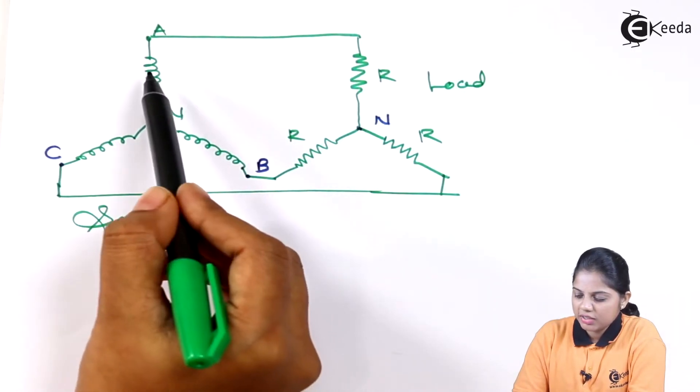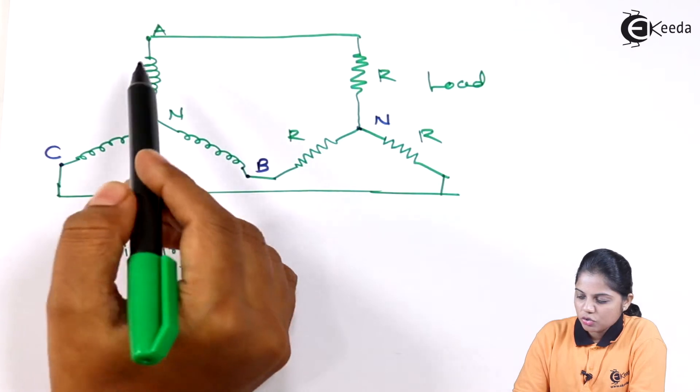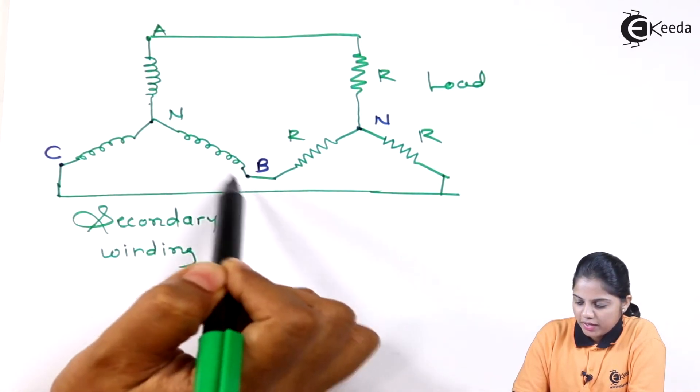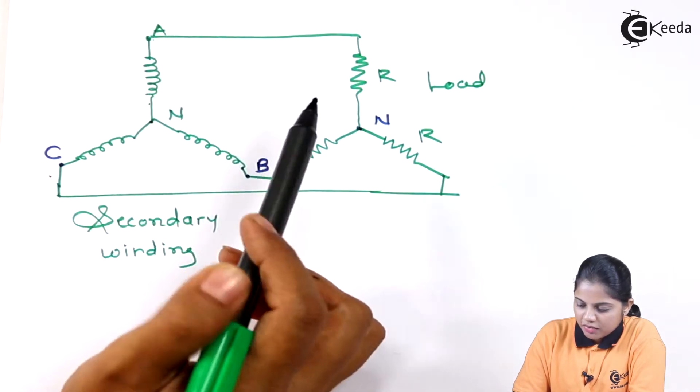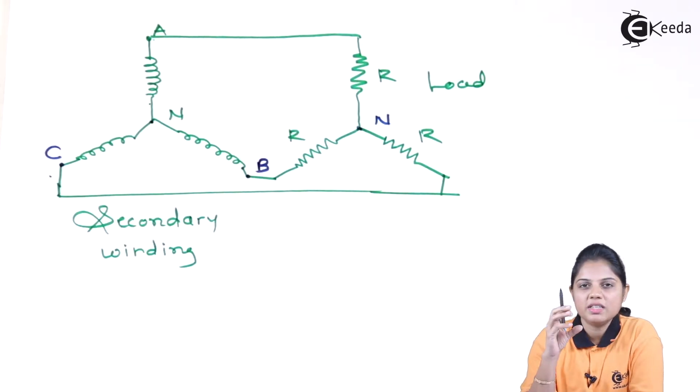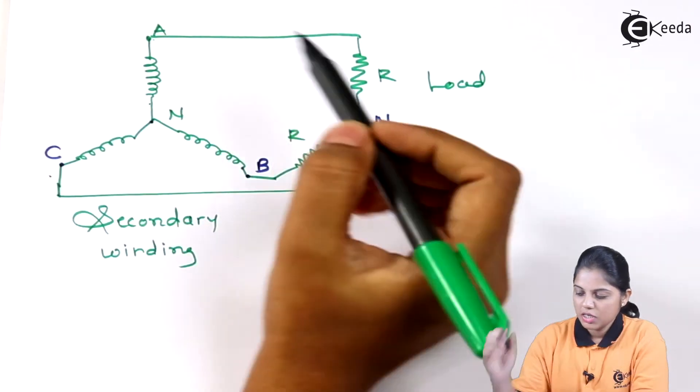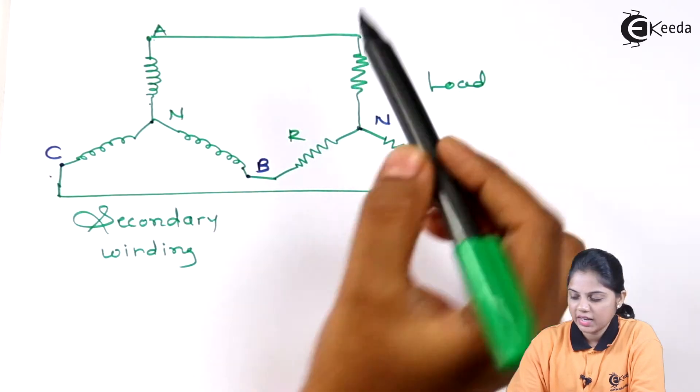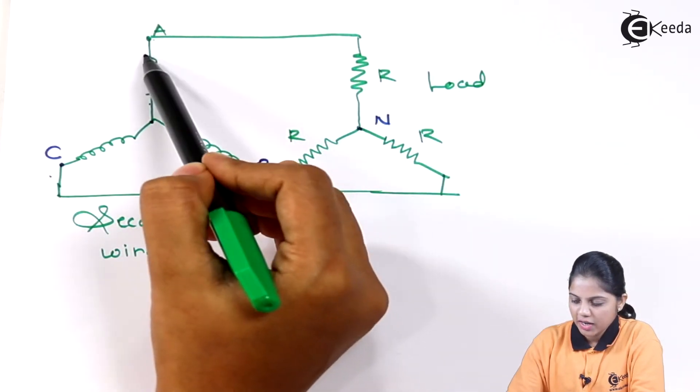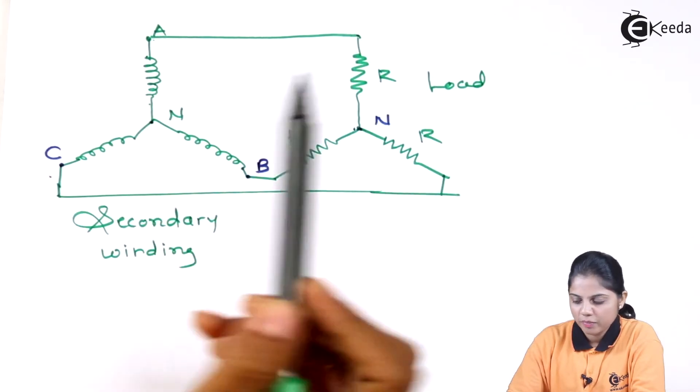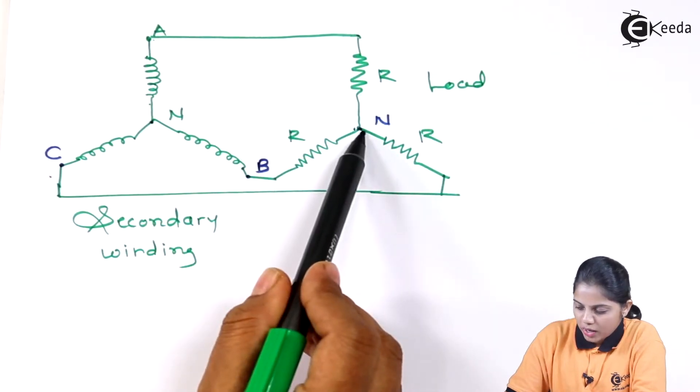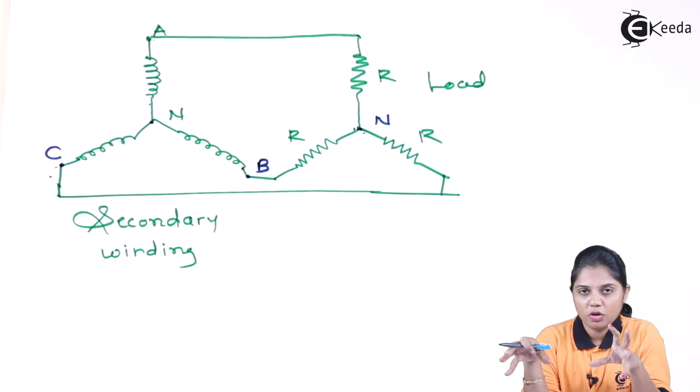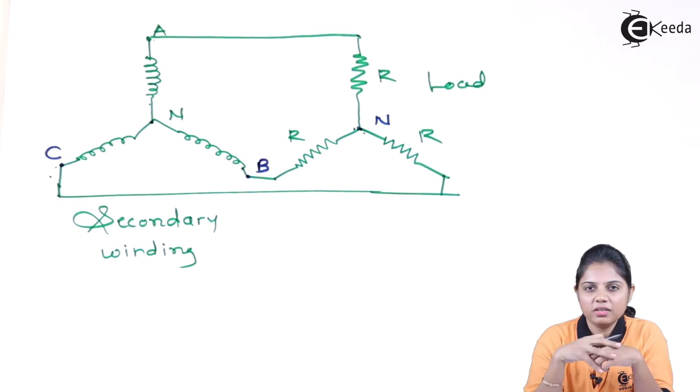Basically you have three-phase that is A, B, and C. This is your secondary winding which is connected to point A, point B, and point C. The naming convention is given so that it will be easy to understand while connecting to the load. So if load is resistive, you should have three different resistors connected. Your secondary winding of point A will be connected to one load, B will be connected to one load resistance, and C will be connected to one load resistance. This is how your connection will look like when you are using three-phase.